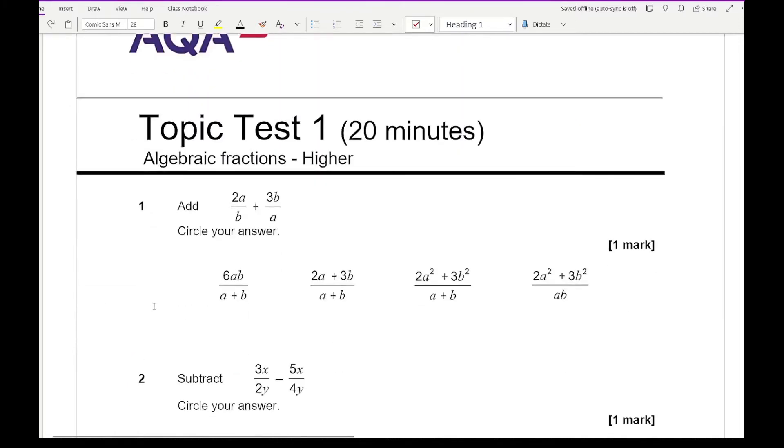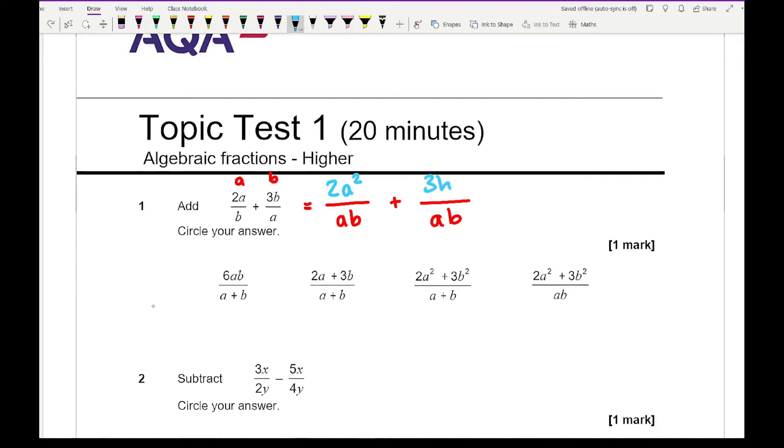Looking at question one, all we need to do is simply add these two fractions together. You need to make sure the common denominator is the same. Our common denominator here is going to be AB. To get AB we need to multiply this first fraction by A and the second by B. That gives us 2A squared and 3B squared, which gives me 2A squared plus 3B squared all over AB. Matching these answers, it's going to be our fourth one.